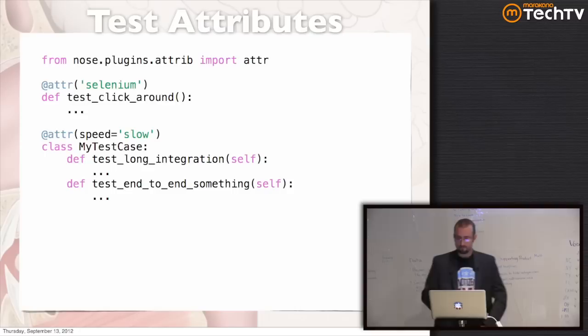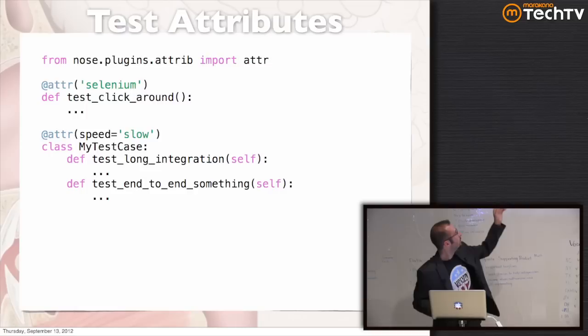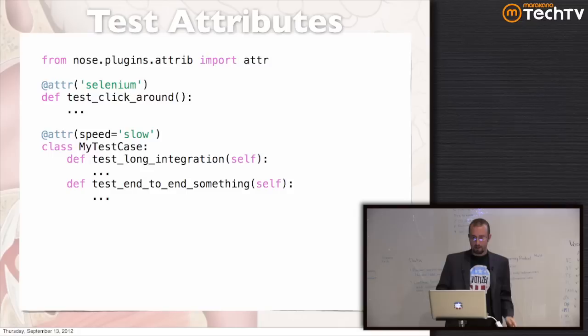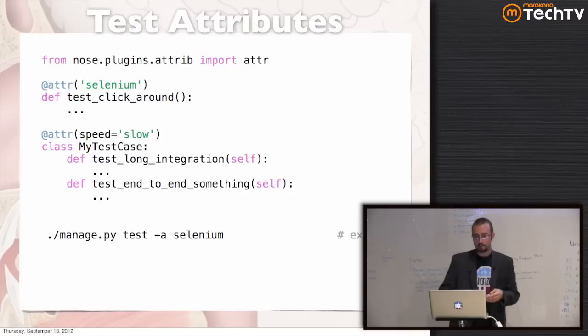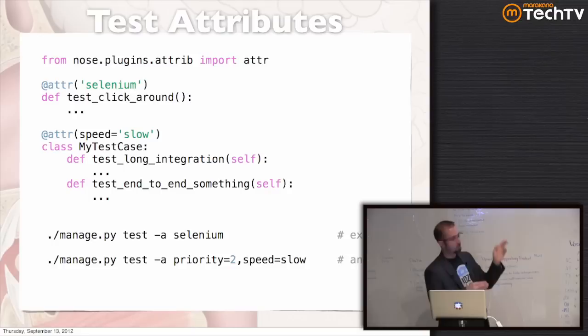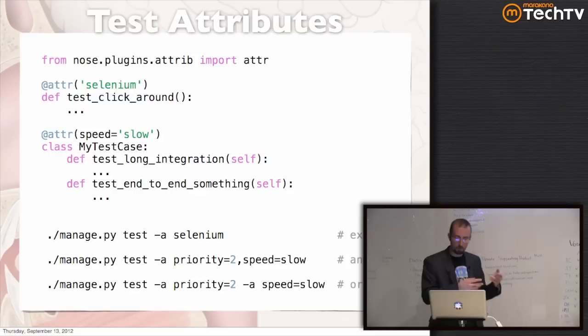Here's a fun trick with attributes. You can use the @attr decorator that Nose provides to stick arbitrary tags onto your tests — it works on classes and functions, and the tags can be unvalued or valued. Then when you invoke Nose through manage.py test, you can say 'only run my Selenium tests,' or use Boolean expressions like 'priority equals two and speed equals slow,' or alternation like 'priority two or slow speed.' Really, really handy stuff.